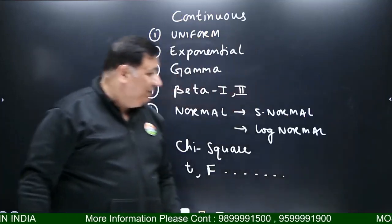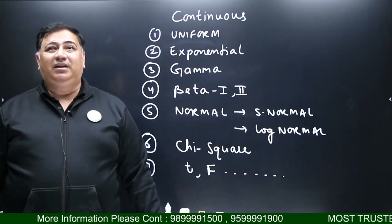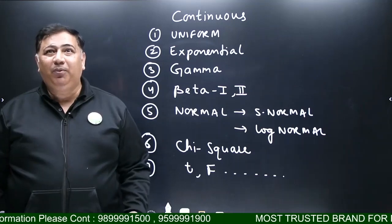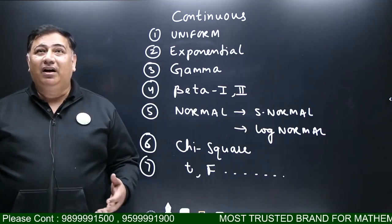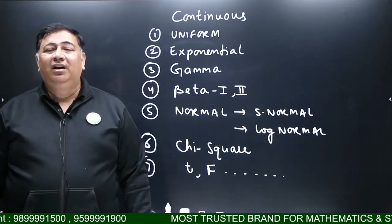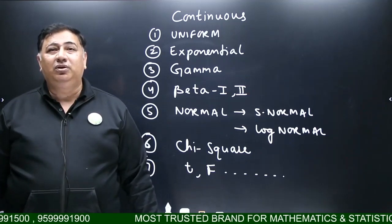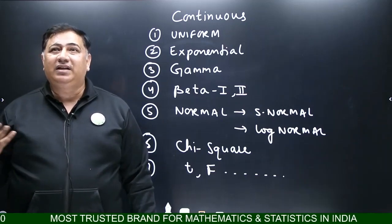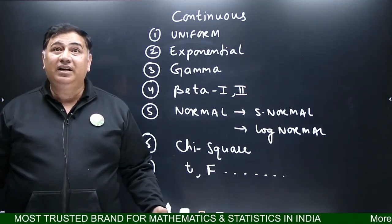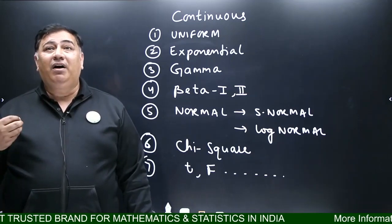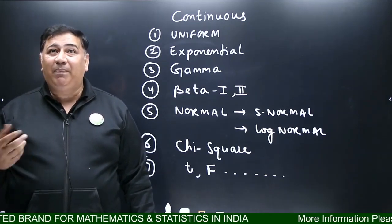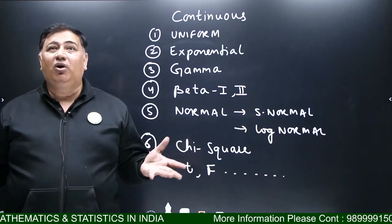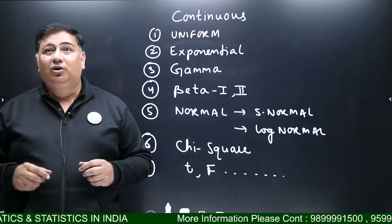Next is continuous distribution — we talk about the waiting time pattern. Uniform, Exponential distribution for waiting for one event, Gamma for waiting for more than one event, Beta distribution which is used in simulation, Normal distribution which solves all problems — it is called the king of all distributions. Standard normal and log-normal are also used. Many more distributions: Chi-square, T, F, Weibull, Logistic, Laplace, Pareto, and Cauchy distribution — all of these solve your problems.